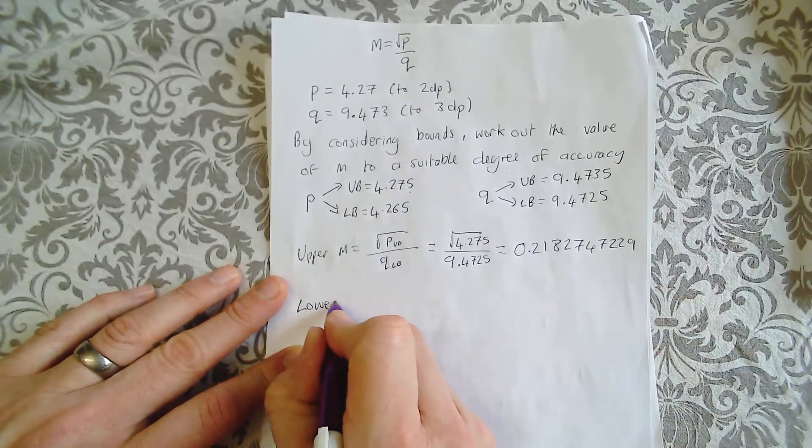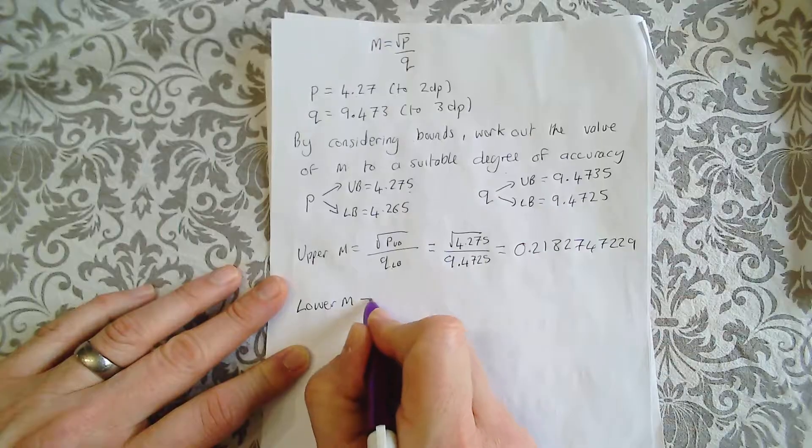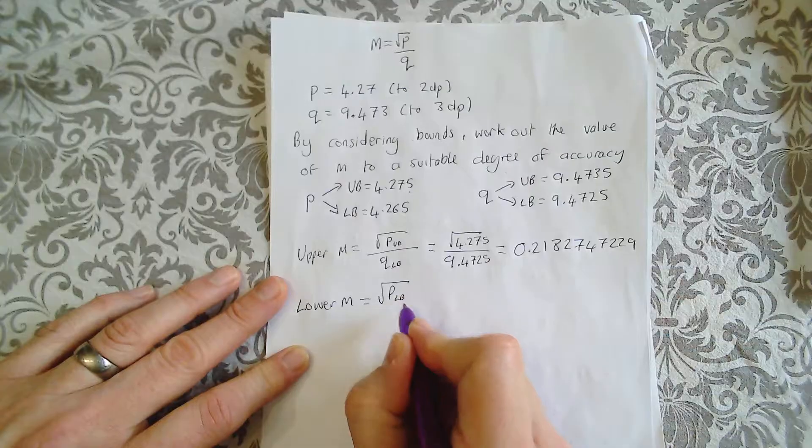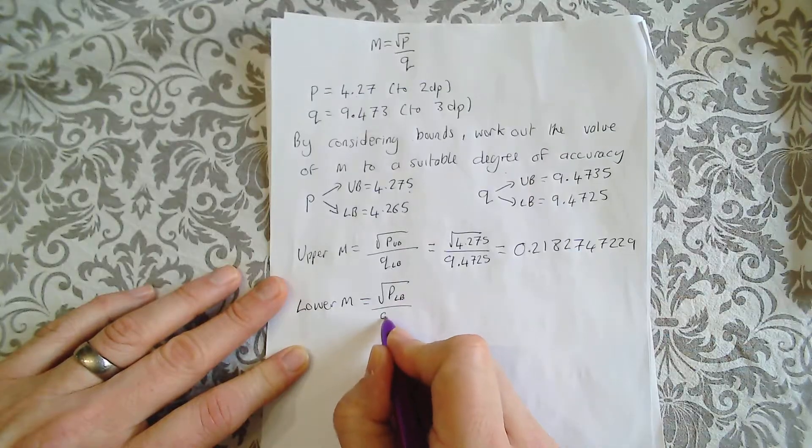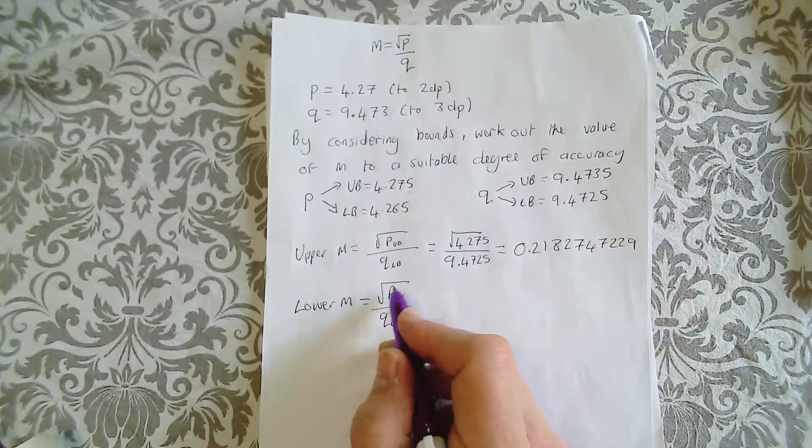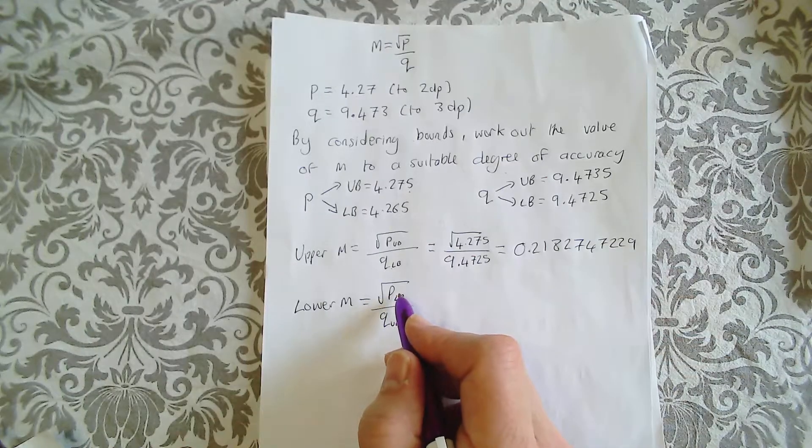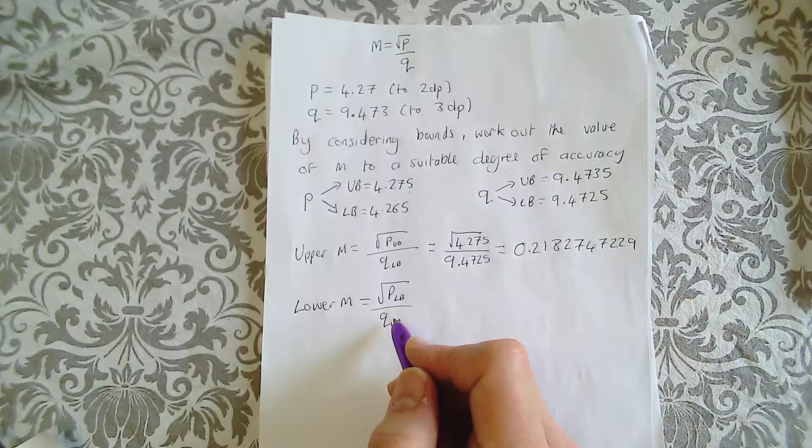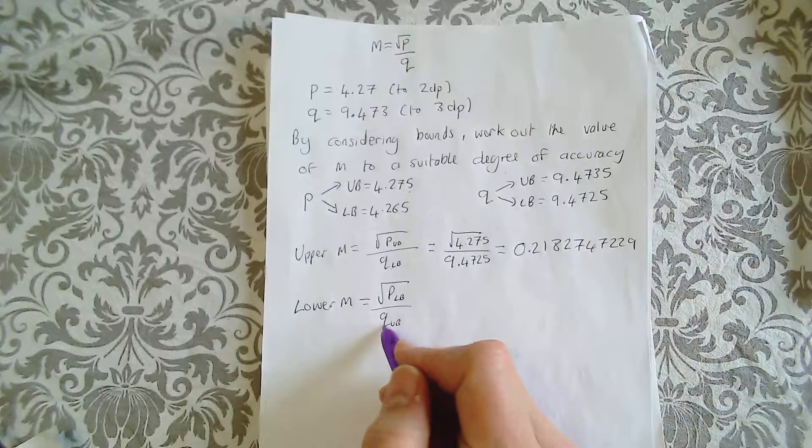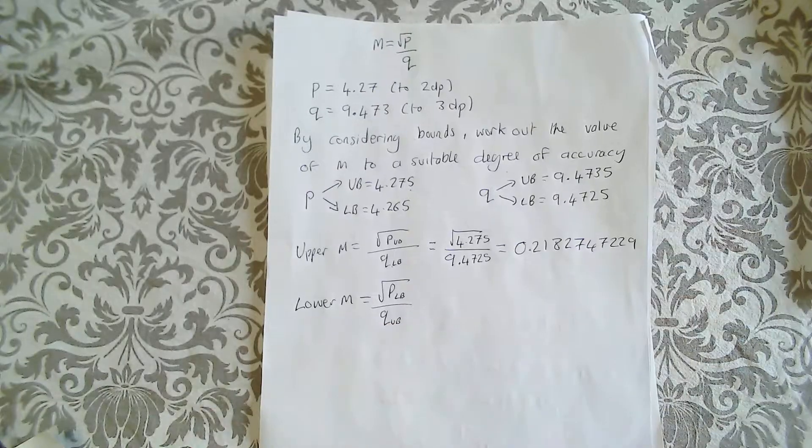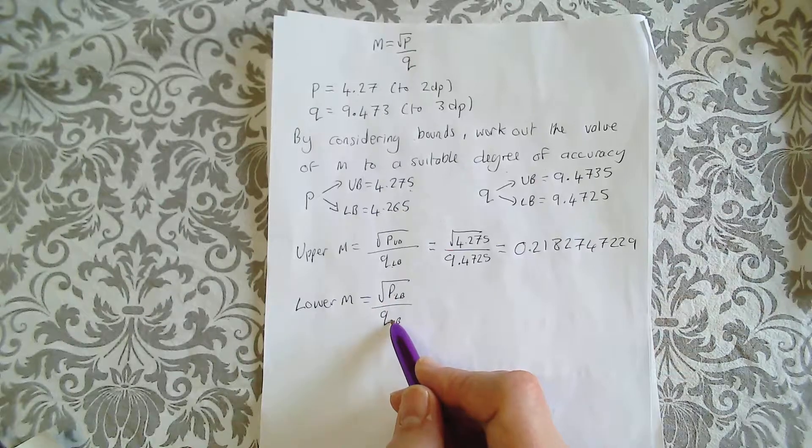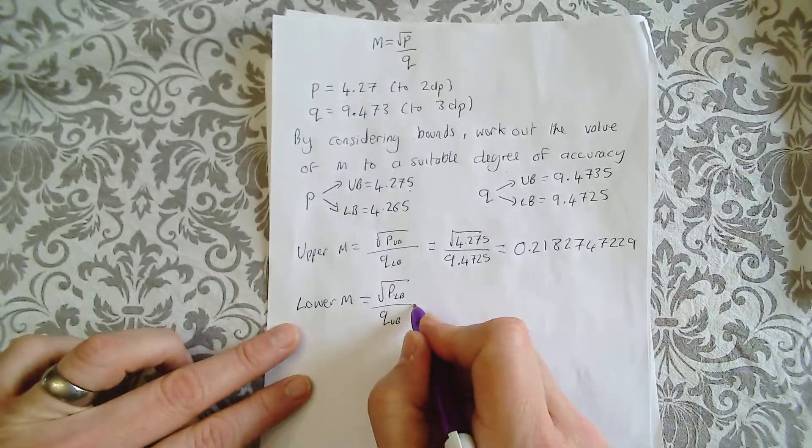Now for your lower M, you do the opposite. You do the square root of P lower bound over Q upper bound. The reason is, if you've got a smaller number to divide by, it'll be smaller. And if you're dividing by a bigger number, it will make it smaller. So small number on the top, bigger number on the bottom gives you the lower value. That's the key.